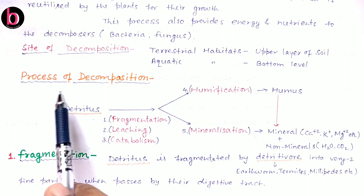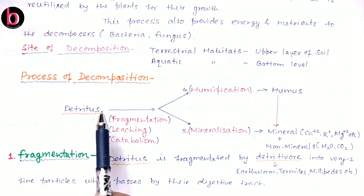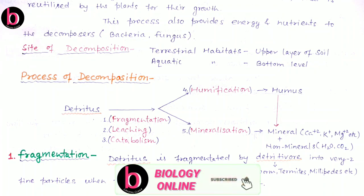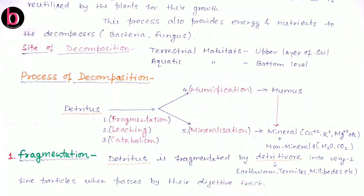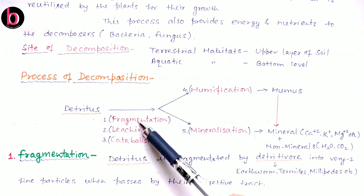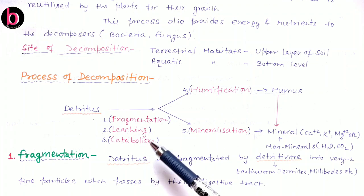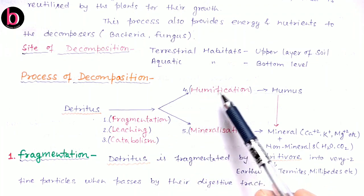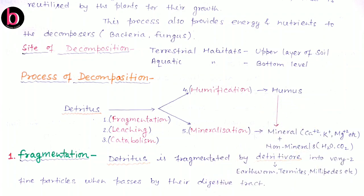Next is the process of decomposition, which is performed over detritus. What is detritus? These are dead organic remains of plants and animals, and also includes excreta of animals. Over these detritus, there are five activities: fragmentation, leaching, and catabolism, followed by humification — which is about humus formation — and mineralization, which involves mineral formation as well as non-mineral substances like carbon dioxide and water.